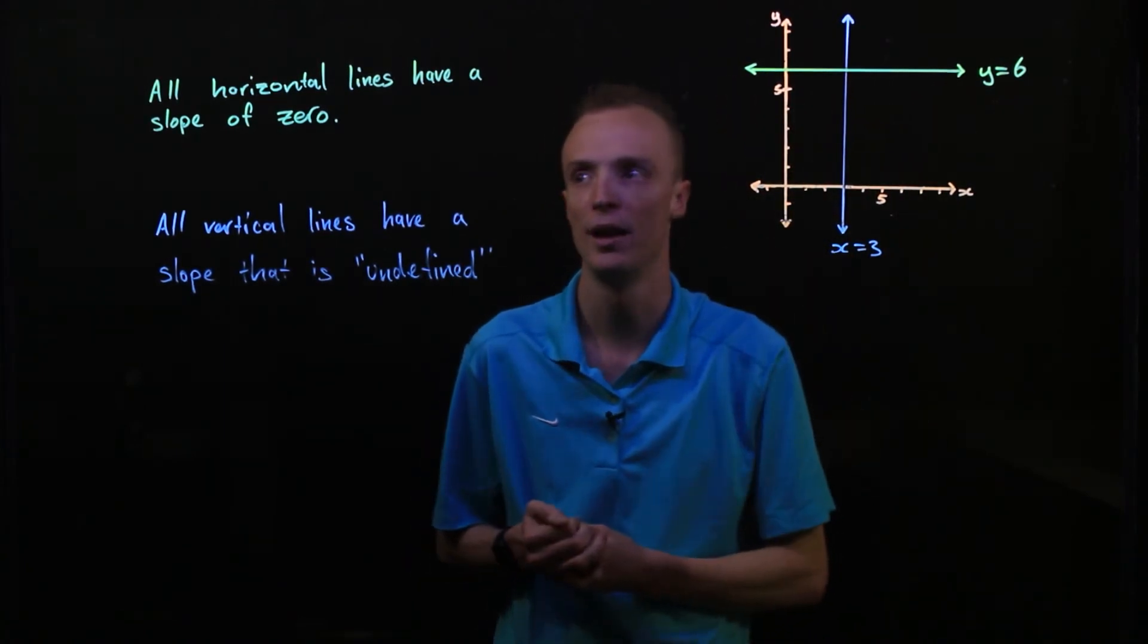So in summary, all horizontal lines can be represented by a simple equation of y equals a value. That value represents whatever the y coordinate always is along that line. It's also the y intercept. The slope of any horizontal line is always zero. It's not rising or falling at all.